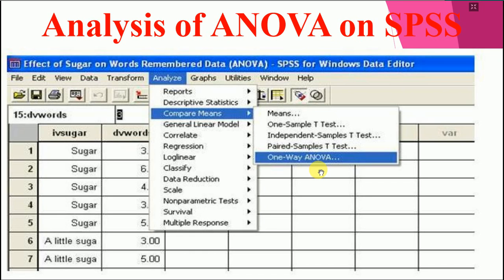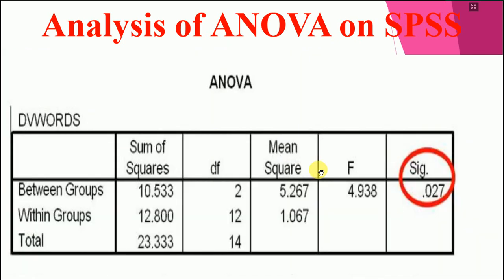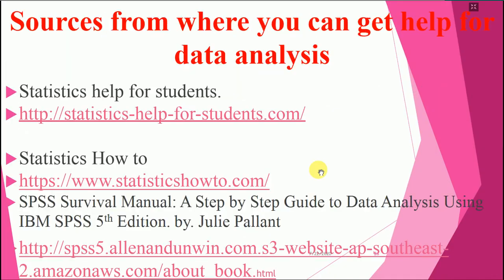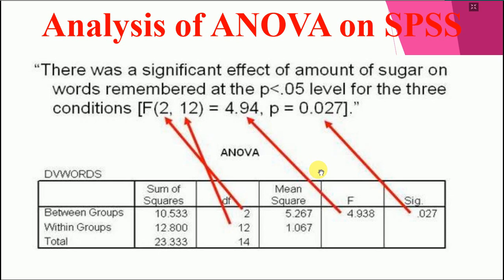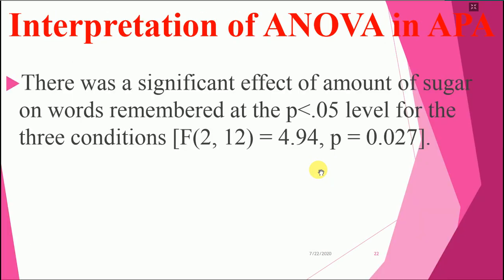When we go to Analysis, Compare Means, and One-Way ANOVA, the significance value is 0.027 between groups. There was a significant effect of amount of sugar on words remembered. F(2, 12) = 4.94, p = 0.027, which is less than 0.05 — the level for the three conditions.